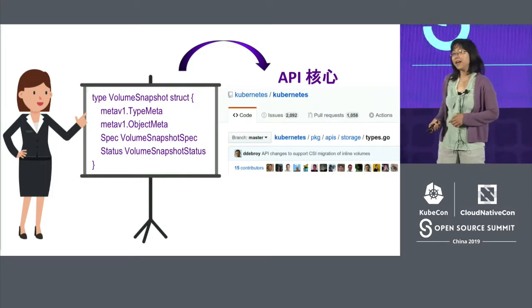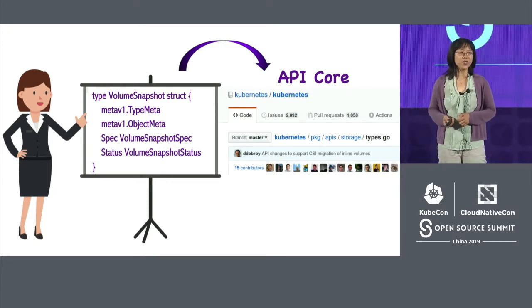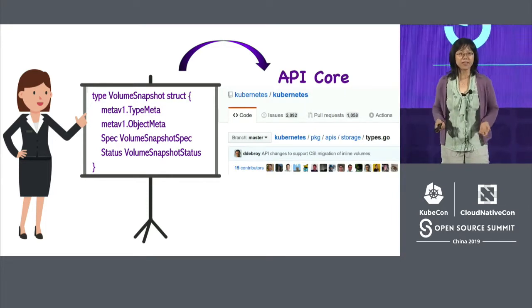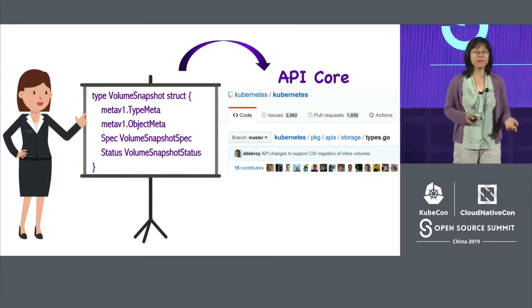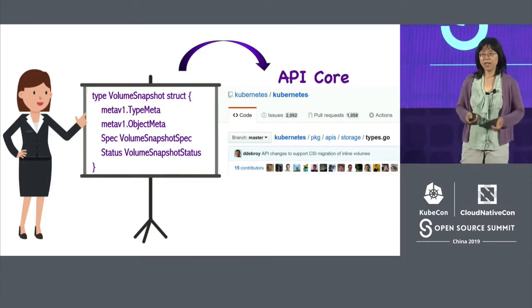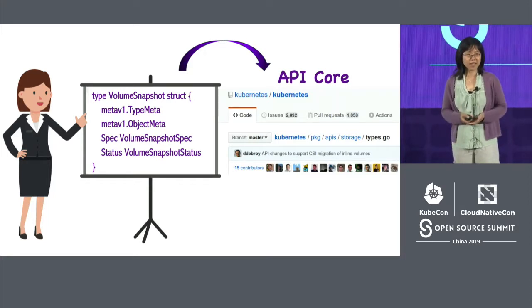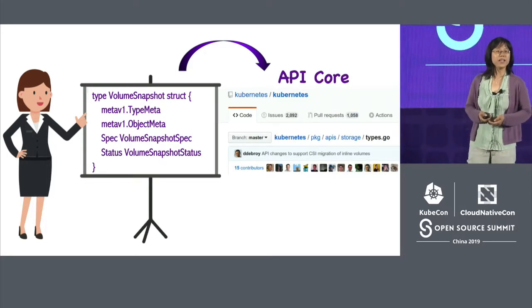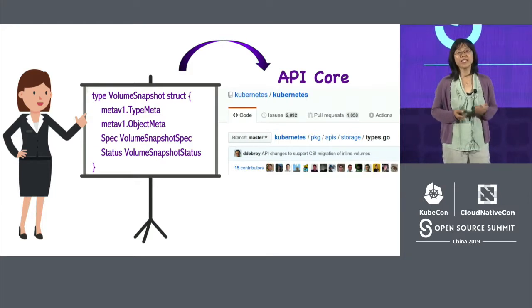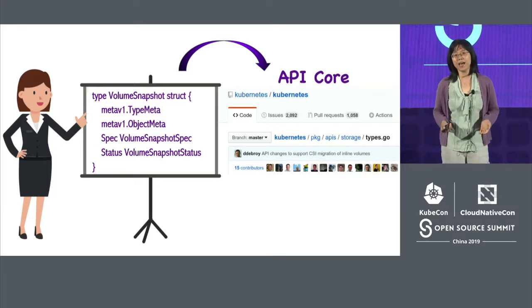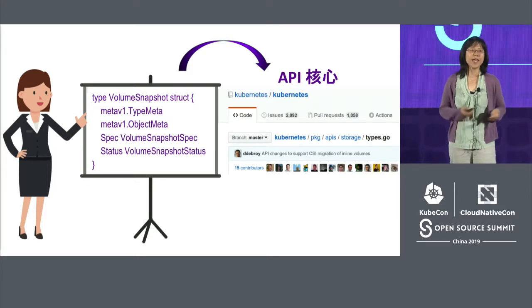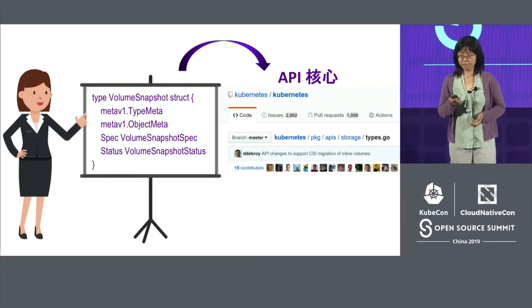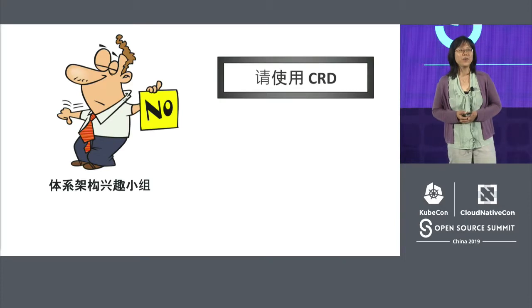We defined an API for volume snapshots, like other Kubernetes APIs. It tells the system what to do, and the controller manages the behavior based on the API. Then we presented the design to SIG Architecture — a group of people who have the power to decide whether to accept your API into Kubernetes core. We hoped to get their approval so we could add Snapshot into the core, and users could start using the Snapshot API. Guess what? We got rejected.